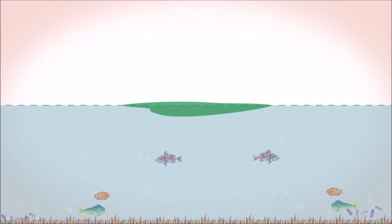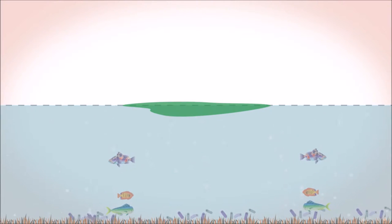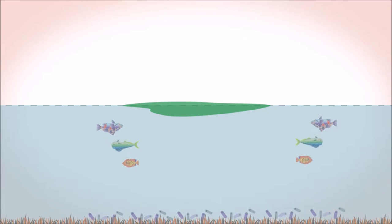Bacteria then feed off the dying vegetation and use up the remaining oxygen supply. Once the oxygen has gone, all animal life dies. The lake ecosystem is destroyed.